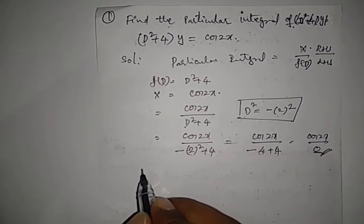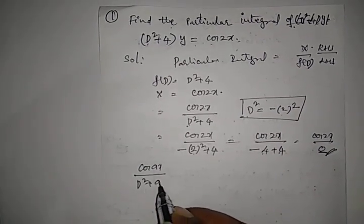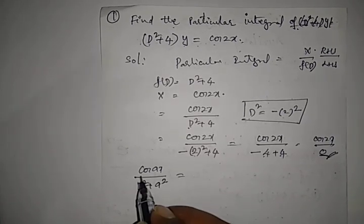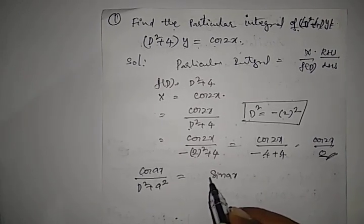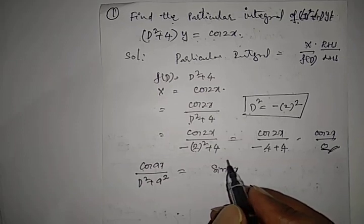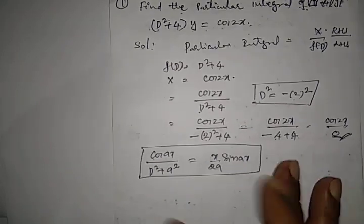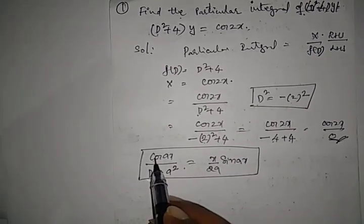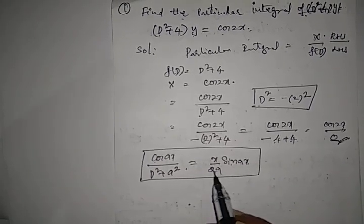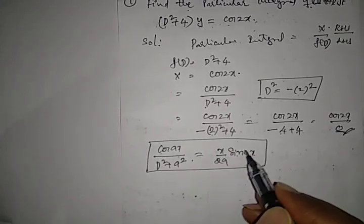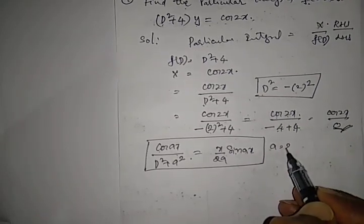Since the denominator is 0, we apply the special formula: cos(ax) / (D² + a²) = x·sin(ax) / (2a). In this formula, cos is replaced by sin(ax), multiplied by x/(2a). Comparing with our expression cos 2x, we identify a = 2.